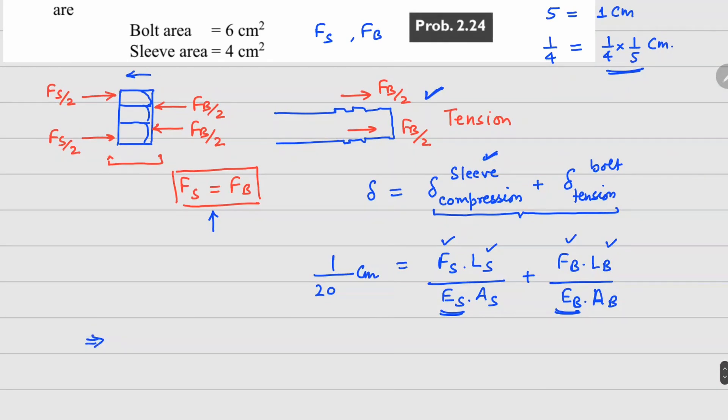With this we can write: 1/20 cm equals—I'll replace Fs equals Fb in both equations. Your length is 15 cm, elastic modulus let's keep as E for steel which is common. The area for the sleeve is 4 cm².